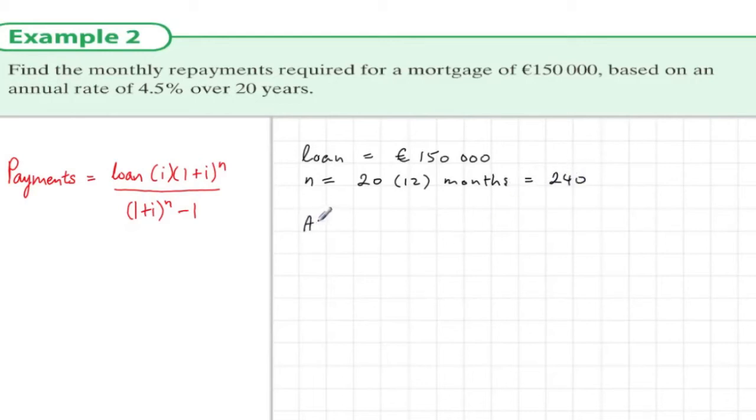We're given the annual equivalent rate, but this isn't so much use as the monthly equivalent rate because each month we're making our payments. So we remember the formula for the conversion: the monthly equivalent rate is the 12th root of one plus i, where i is the annual equivalent rate, minus one.